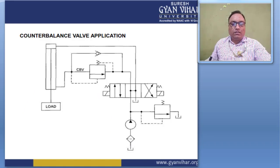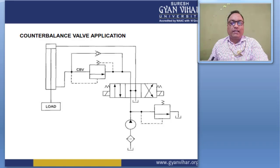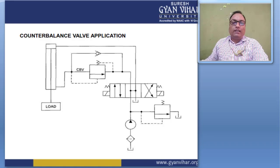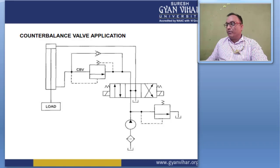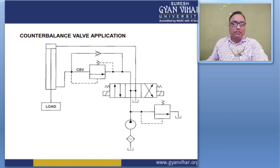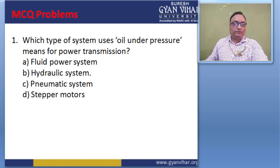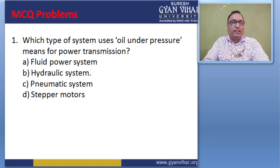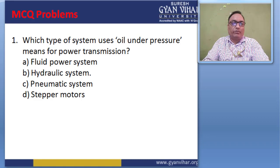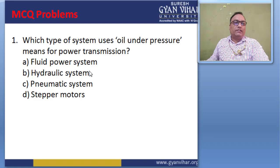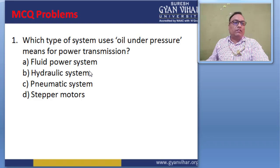Moving to the MCQ section: Question 1 — Which type of system uses oil under pressure as a means of power? Options: fluid power system, hydraulic system, pneumatic system, stepper motor. The correct answer is B — hydraulic system, which always uses oil under pressure. Question 2 — The force developed in the hydraulic system is due to high pressure. The correct answer relates to high pressure.